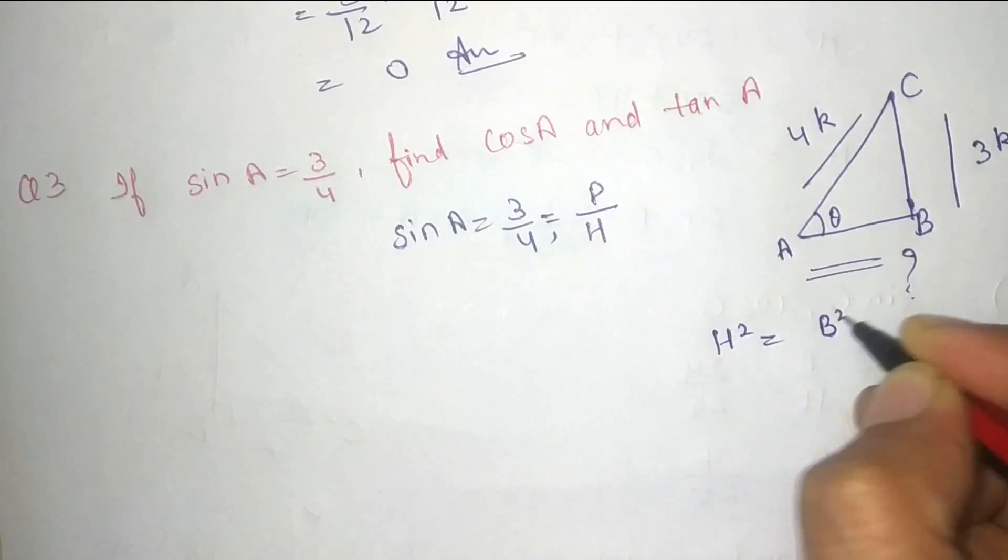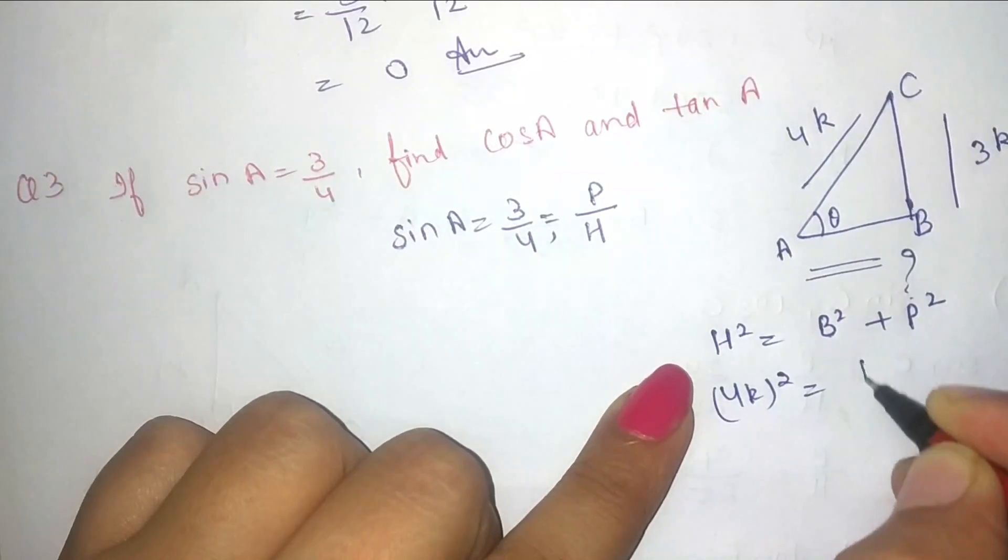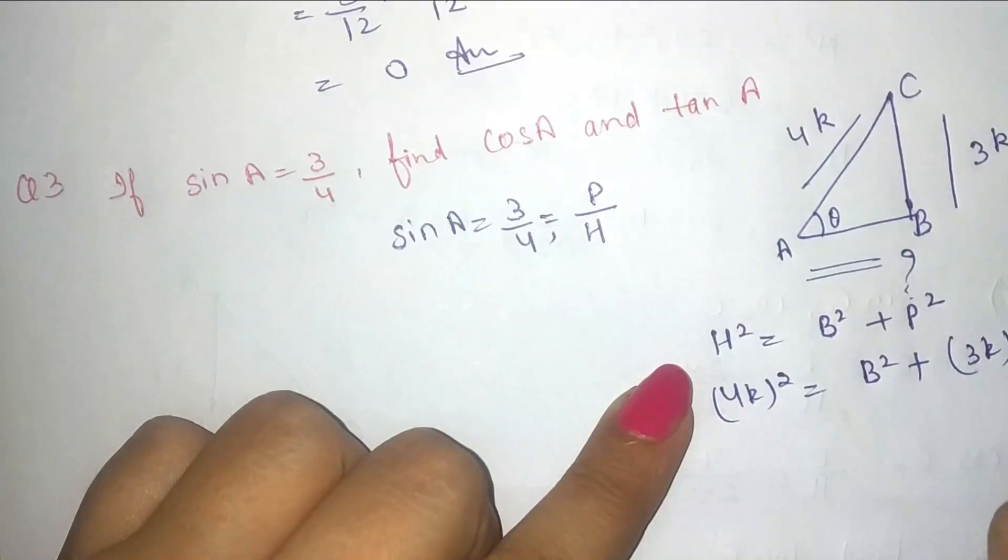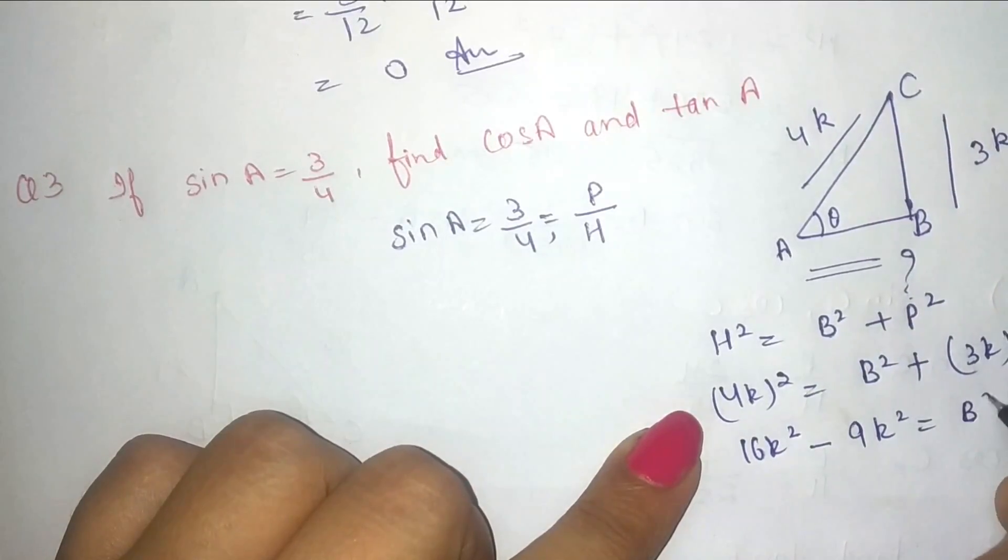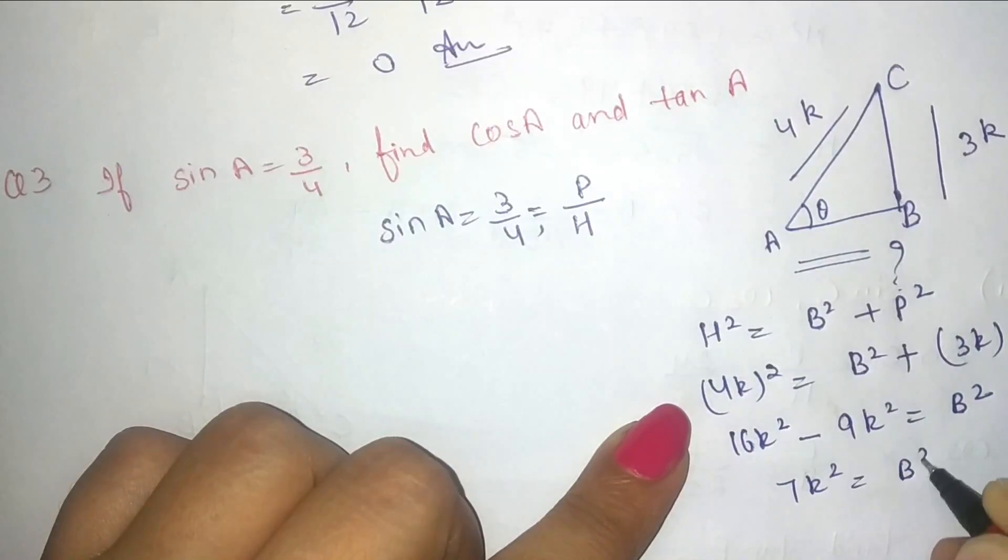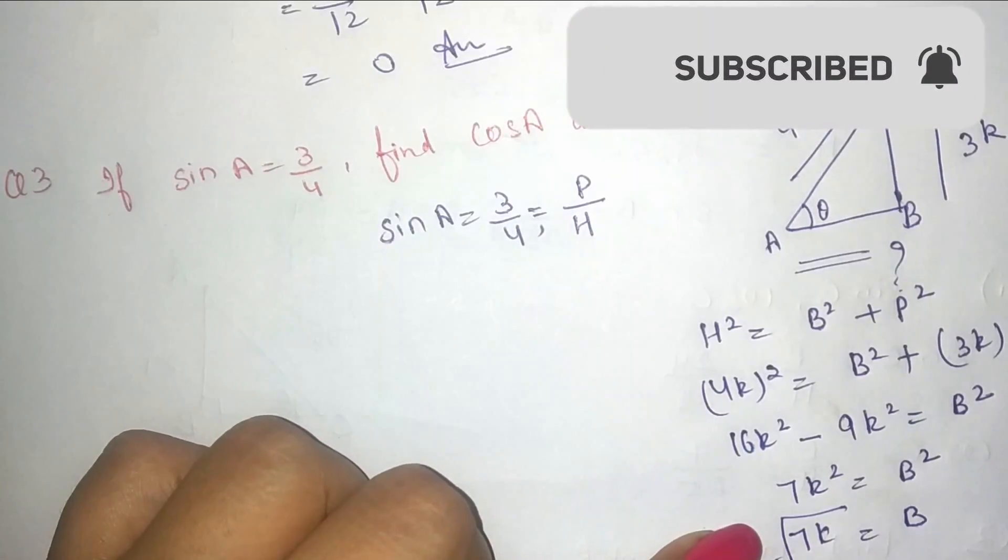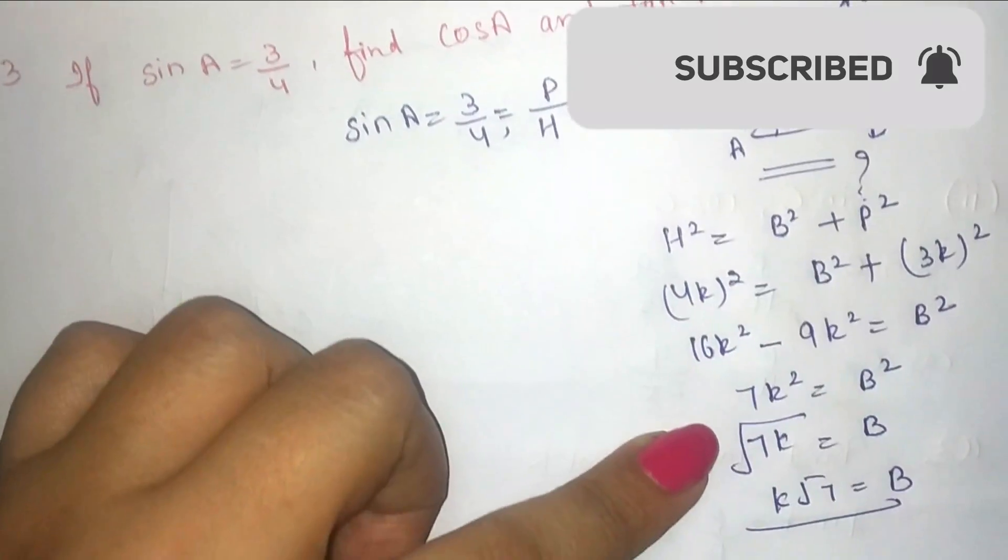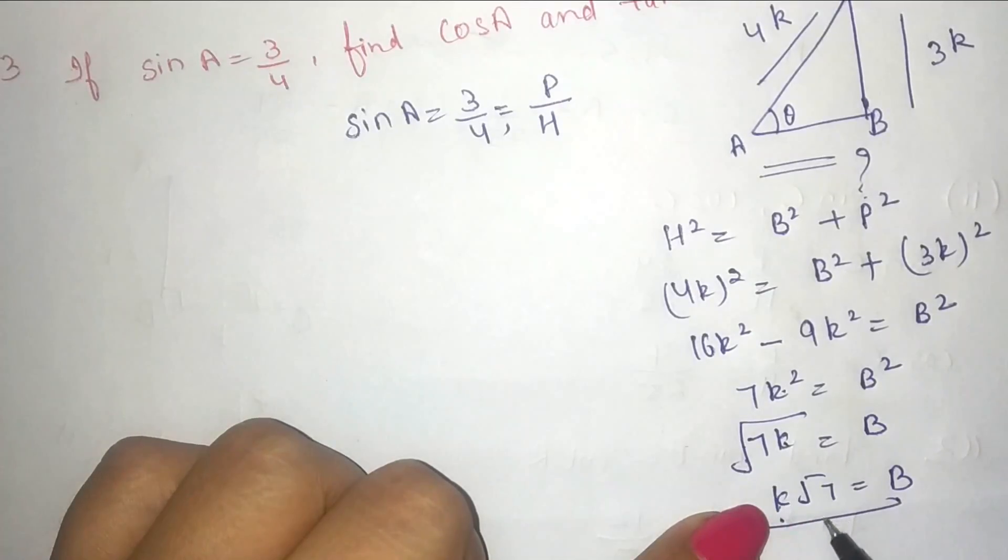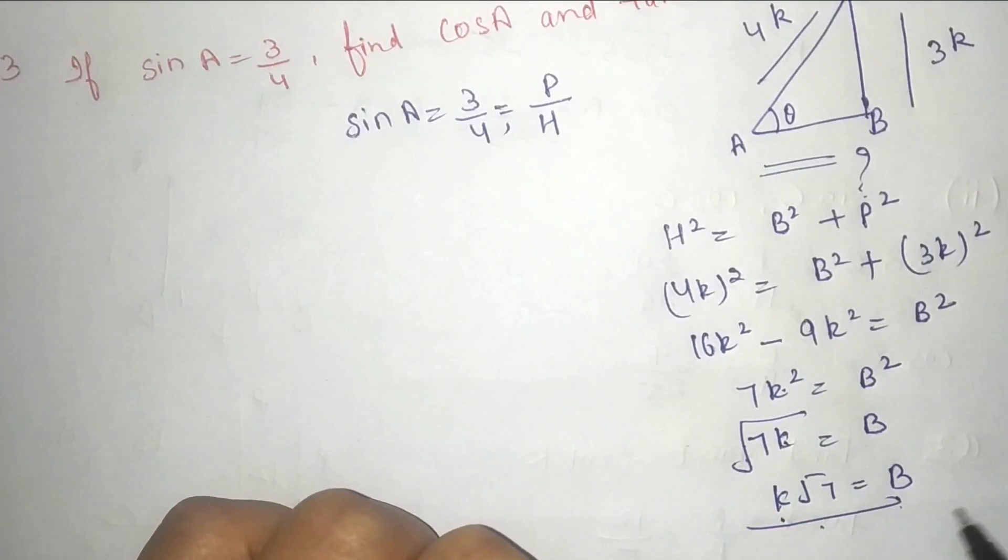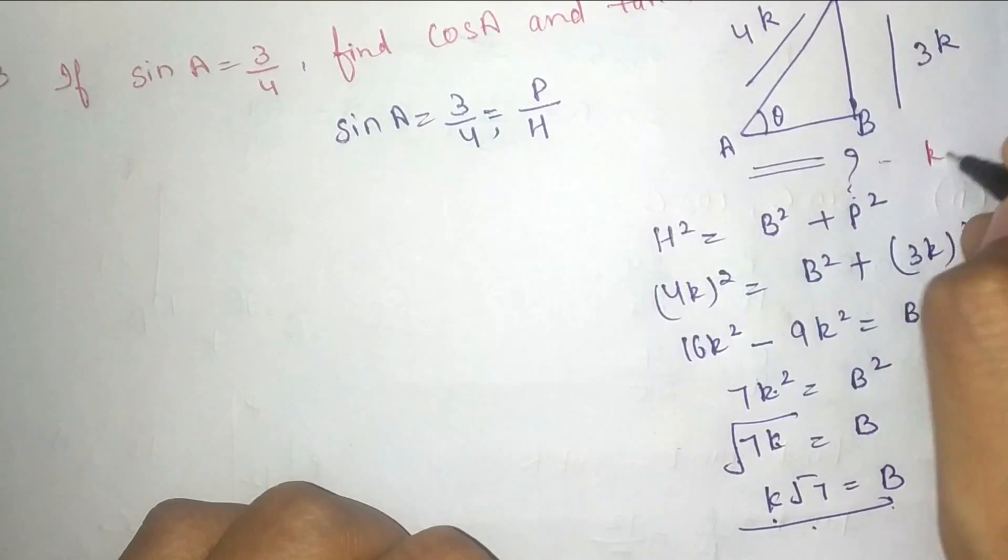H square is equal to B square plus P square. H ki value hai 4k ka square, B we have to find out, perpendicular is 3k square. So it will be 16k square minus 9k square is equal to B square. So 7k square is equal to B square. Now root 7k is equal to B, so it will become k root 7 equal to B. K square root hai toh k bahar ajaega aur root 7 is not a perfect square, so root 7 equal to B.